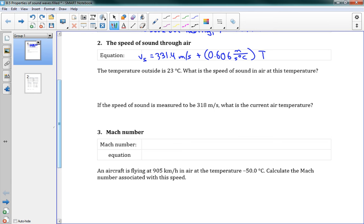So we'll do a problem using this. The temperature outside is 23 degrees Celsius. What's the speed of sound in the air at this temperature? We have V is equal to 331.4, plus 0.606, times 23 degrees Celsius. And it gives us 345 meters per second. And it's as simple as that.